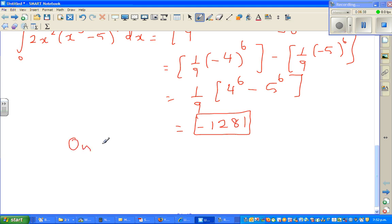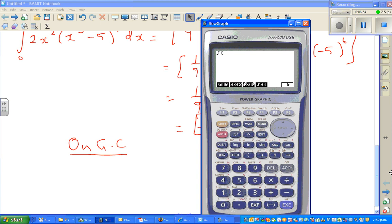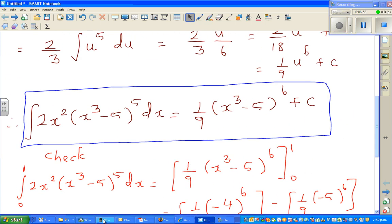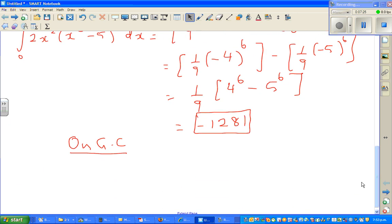Now how to use on a calculator, on GC. How will we do that? So you go option, calculus, integration. So let me delete this. Integration of what was the function? So this was a function. So I'll type in 2x squared bracket x to the power 3 minus 5 raised to 5. And it is definite integration between 0 and 1. So you go comma 0 comma 1. Close the bracket. There we go. The answer is -1281. So you can be quite confident that your answer is right. On the graphic calculator, we got the same answer minus 1281. So you should be pretty happy that your answer is right.